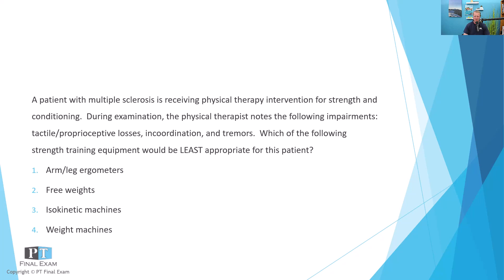The answer choices are: one, arm/leg ergometers; two, free weights; three, isokinetic machines; and four, weight machines. So we have arm/leg ergometers, free weights, isokinetic machines, and weight machines.